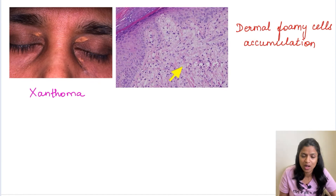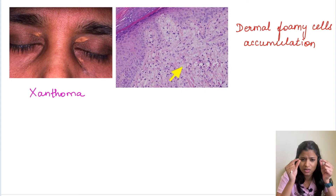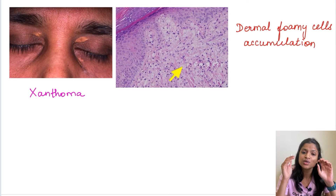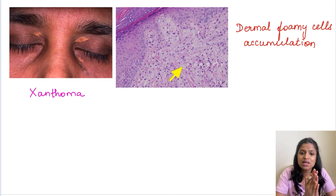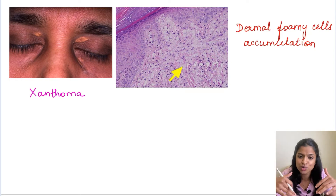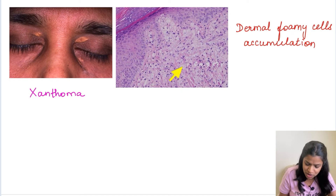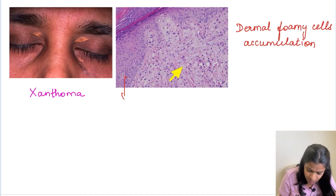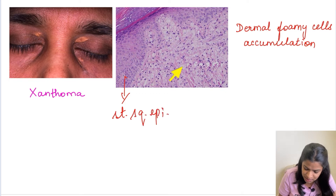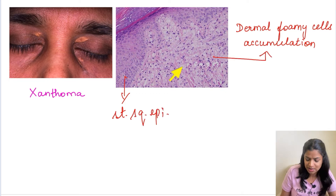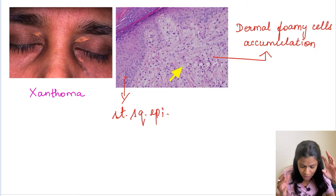The next example is a xanthoma. We have all seen elderly people with yellow colored masses underneath their eyebrows, especially around the eyes. These are xanthomas — collections of foamy macrophages in the sub-epithelial tissue laden with cholesterol. In the histological image, beneath the stratified squamous epithelium, we can see dermal foamy macrophages filled with cholesterol in the sub-epithelium.